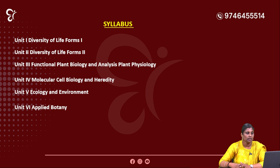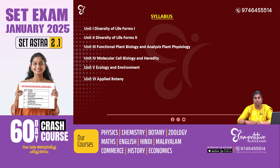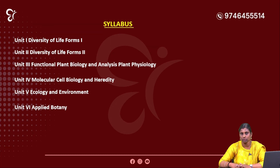We will study the following units. Unit 1: Diversity of Life Forms 1. Unit 2: Diversity of Life Forms 2. Unit 3: Functional Plant Biology and Plant Physiology. Unit 4: Molecular Cell Biology and Heredity. Unit 5: Ecology and Environment. Unit 6: Applied Botany. There are 6 units in total.